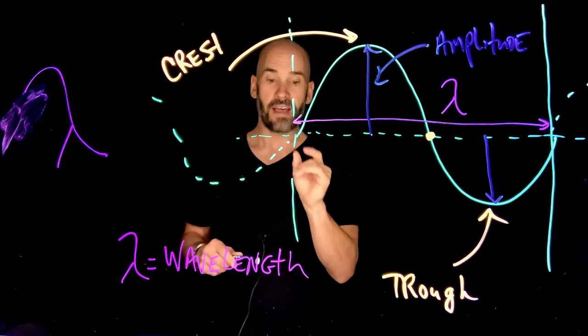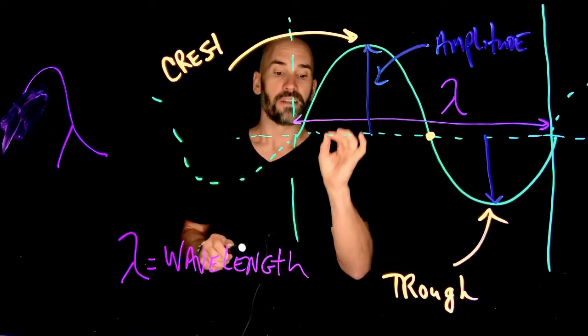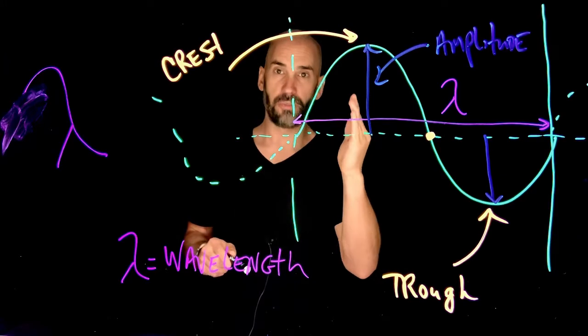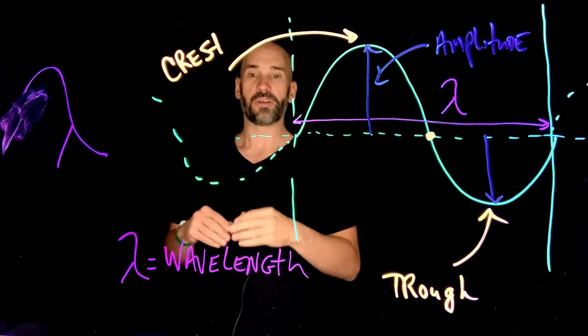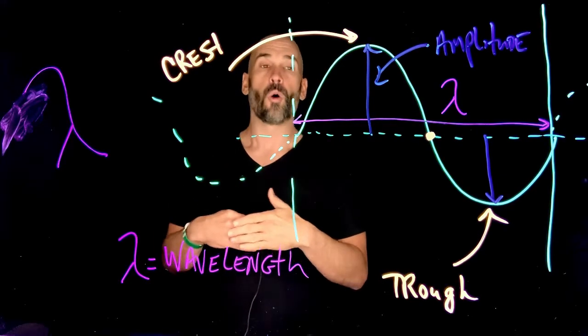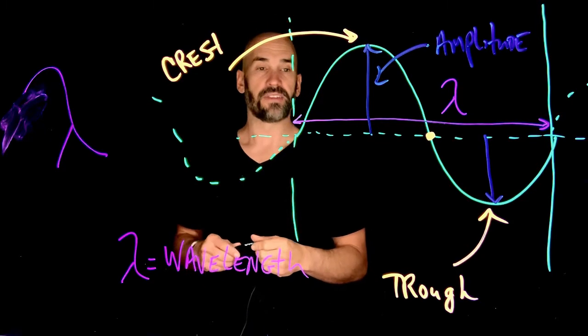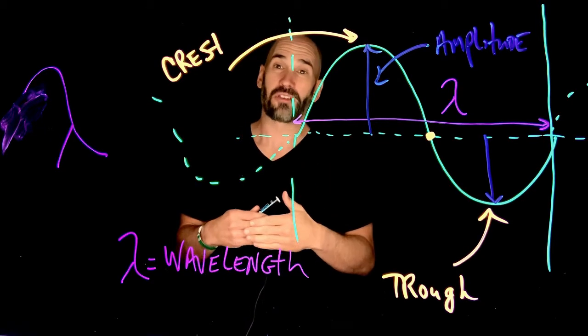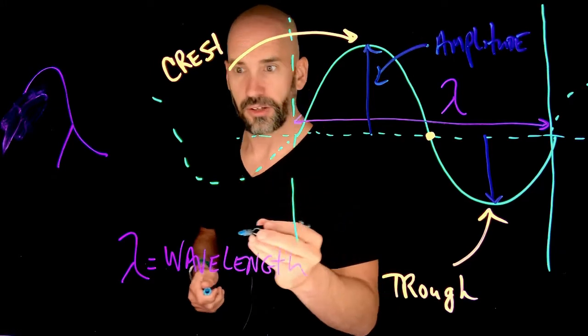Lastly, we have frequency. And the frequency is how many waves pass a certain point per second. You can think of this as cycles per second or waves per second. And so it's basically the rate at which the wave jiggles. And it's measured in hertz.